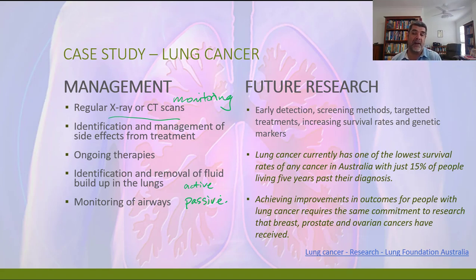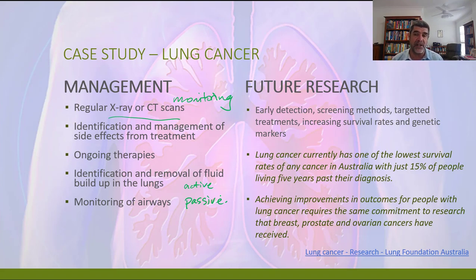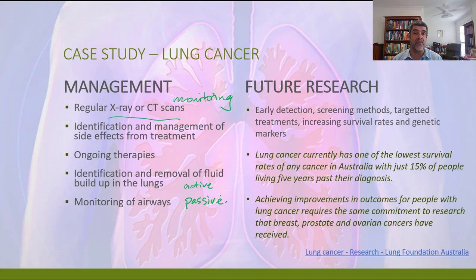There is a Lung Foundation in Australia, and they have on their website research areas they're looking at for the future. In general, early detection, successful screening methods, targeted treatments, increasing survival rates, and genetic markers can all be areas where we look at how lung cancer can be addressed in the future. Things like CRISPR, gene technologies, and gene therapies that may be very specific may also have an impact on the management, treatment, and perhaps even prevention of lung cancers in the future.